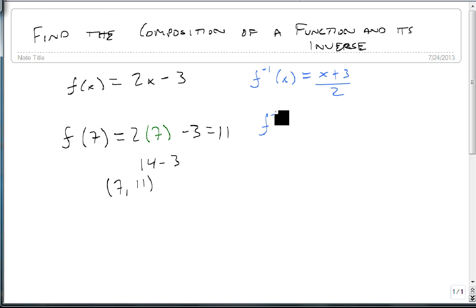If I were to take the other end and take the inverse of 11, that output that I just found, and notice it goes into the input now, that's going to equal 11 plus 3 over 2, 14 over 2, which is 7. So it gives me a point (11, 7) for the inverse.